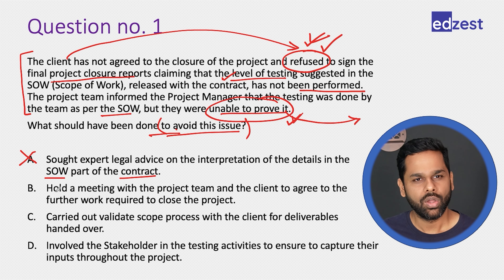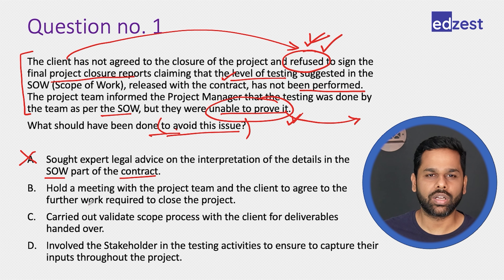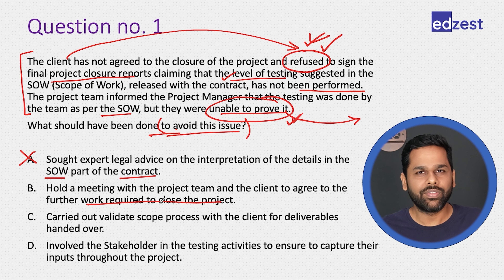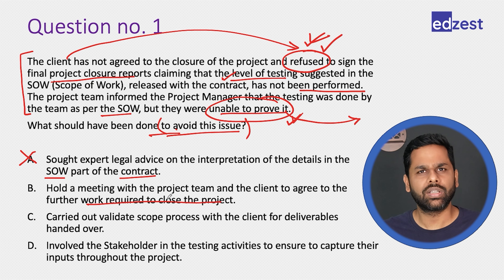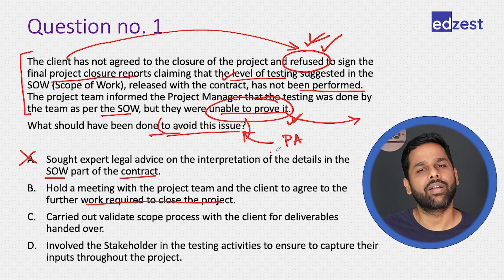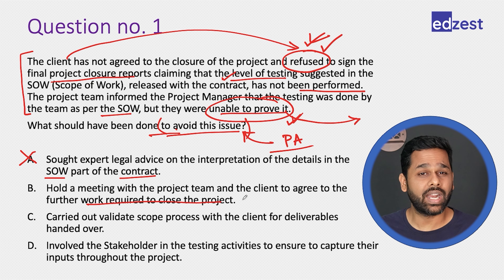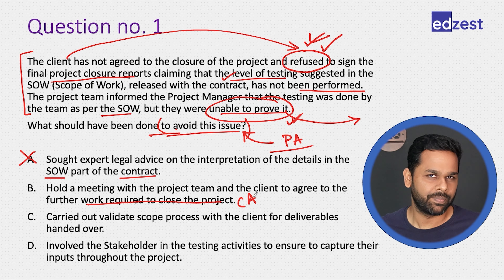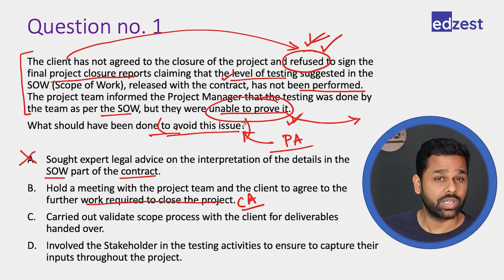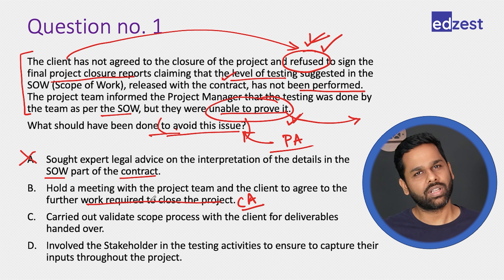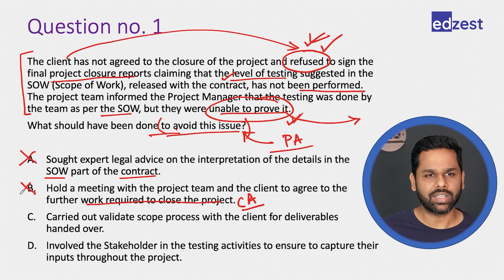Option B: hold a meeting with the project team and the client to agree on further work required to close the project. That is also not the issue — it is not that the team has not done the work. Also, the question is asking for a preventive action, but option B is talking about a corrective action. This will happen in PMP exam questions — they ask for preventive action and an option talks about corrective action, or vice versa. We should be very clear with that. We can eliminate it.